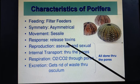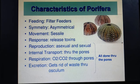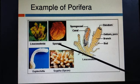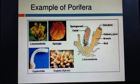They release toxins. Reproduction is by asexual or sexual means. Excretion, respiration, and internal transport occur through the pores. Examples of Porifera include Leucosolenia, Spongia, Euplectella, and Sypha.